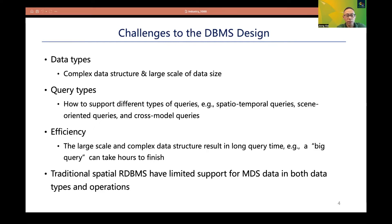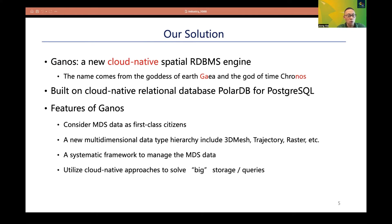As far as we know, traditional spatial RDBMSs have limited support for MDS data in both data types and operations. To overcome these challenges, we developed a new cloud-native spatial RDBMS engine called GANIS. The name comes from the goddess of Earth, Gaia, and the god of time, Chronos. It's built on the cloud-native relational database PolarDB for PostgreSQL, developed by Alibaba Cloud. GANIS considers MDS data as first-class citizens, presents a new multi-dimensional data-type hierarchy, and provides a systematic framework to manage MDS data. It utilizes cloud-native approaches to solve big storage and big query challenges.